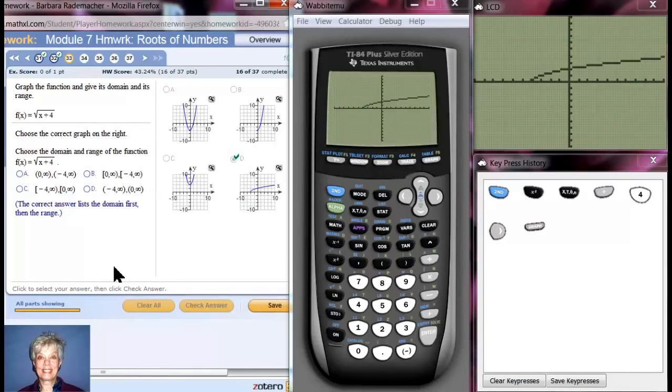Look at the graph and tell me what the domain is. Notice the graph starts at negative 1, negative 2, negative 3, negative 4, and then it goes forever to the right. So we're going to do the domain first and then the range. The domain is going to go from negative 4 to infinity.